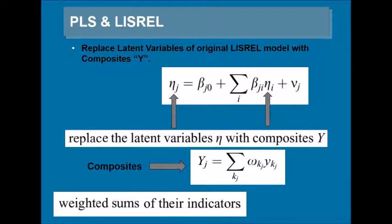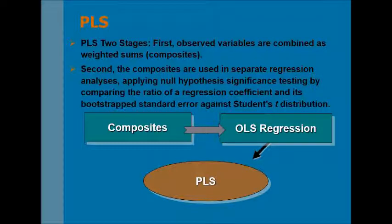PLS is a two-stage process. First, observed variables are combined as weighted sums that are called composites. Second, the composites are used in separate regression analyses.